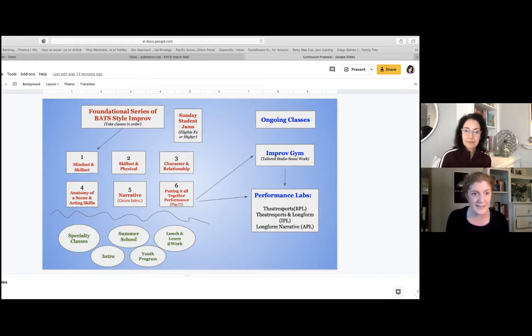So for instance, all of these red classes here are foundational to Bats style improv, the mindset of spontaneity and positivity, the skillset and physical presence, stage presence, even on zoom, building characters and relationships, what the pieces of a scene are, getting really good at recognizing those things.